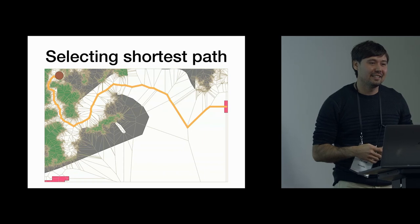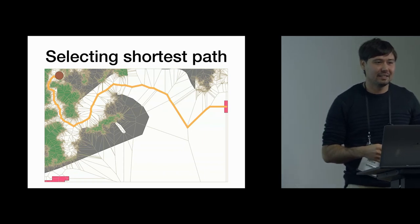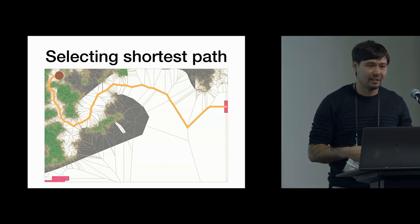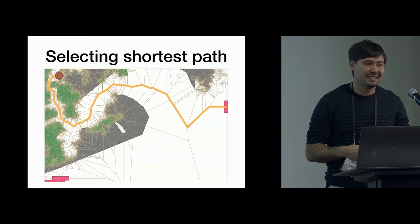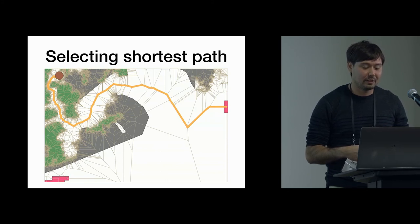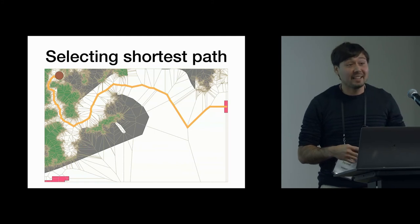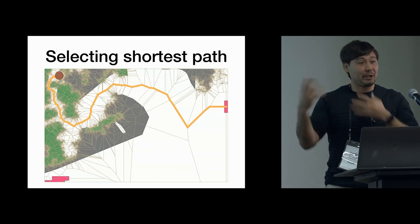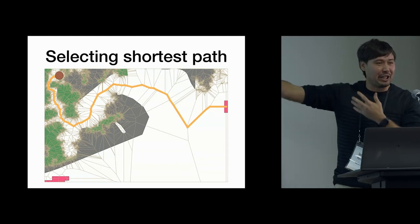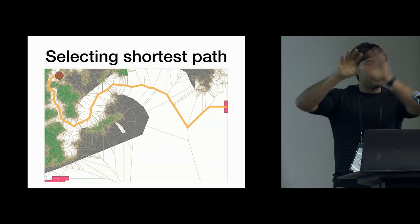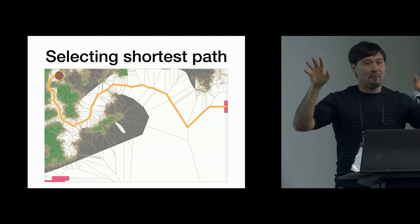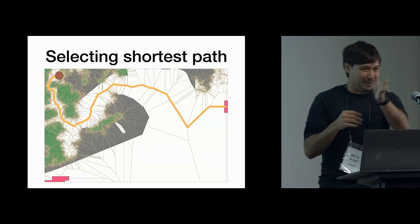Are you using the edges from the Voronoi polygon for the routing? Yes. Since those are basically the edges of whatever it is, would it be better to look at the centroids of the Voronoi polygons and then build a network out of the centroids? I think there are certainly a lot of ways you can improve this — you can do a triangulated irregular network from these points as well and join it to the polygon. That would be a better idea.